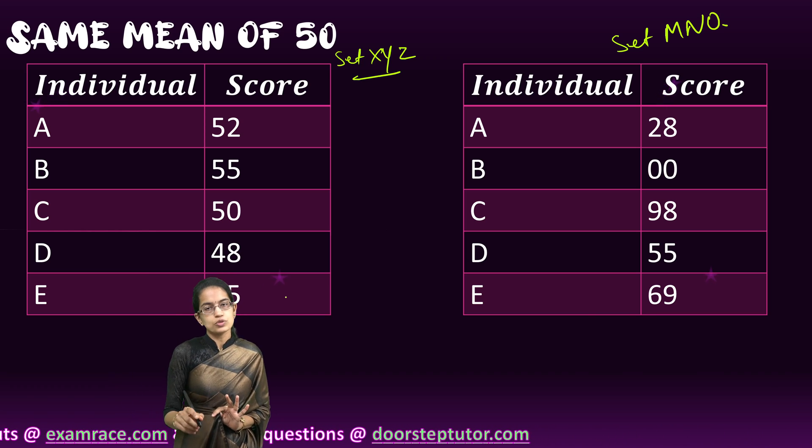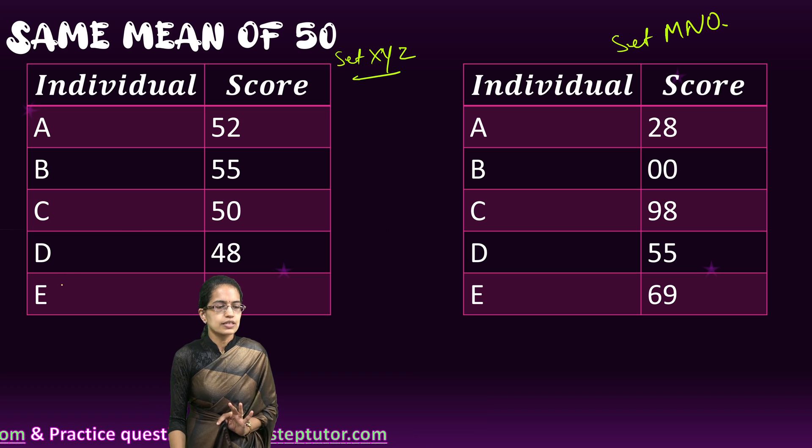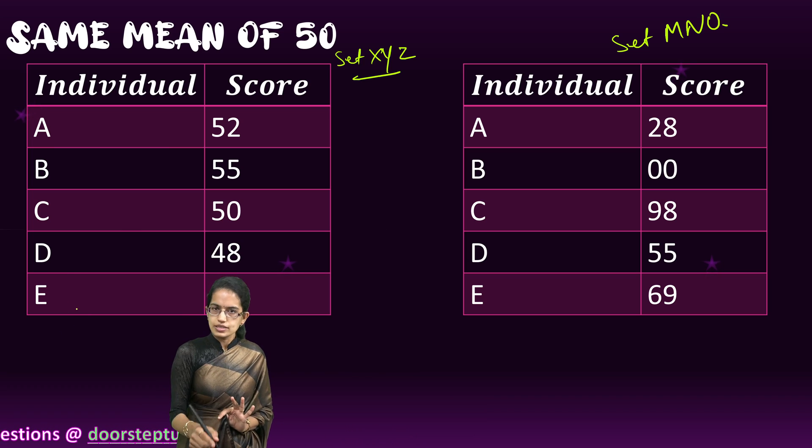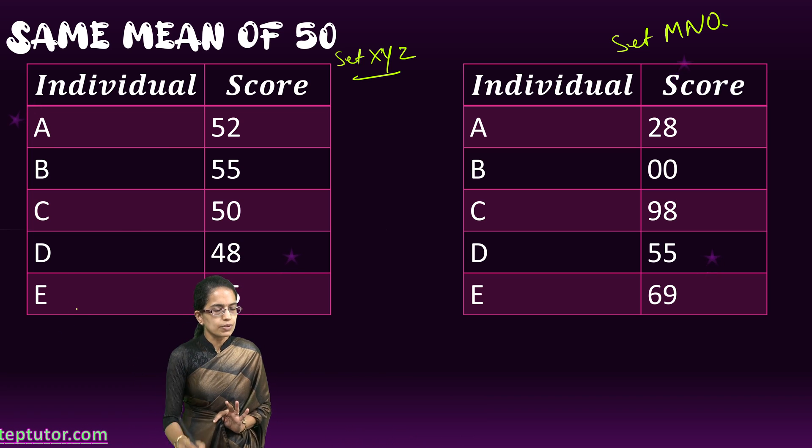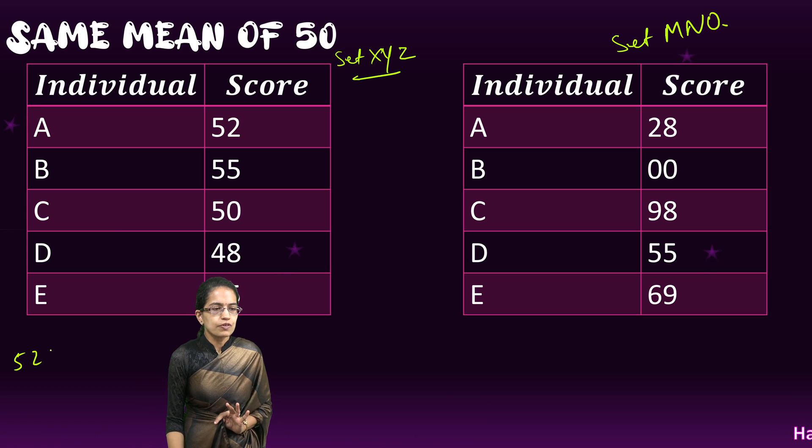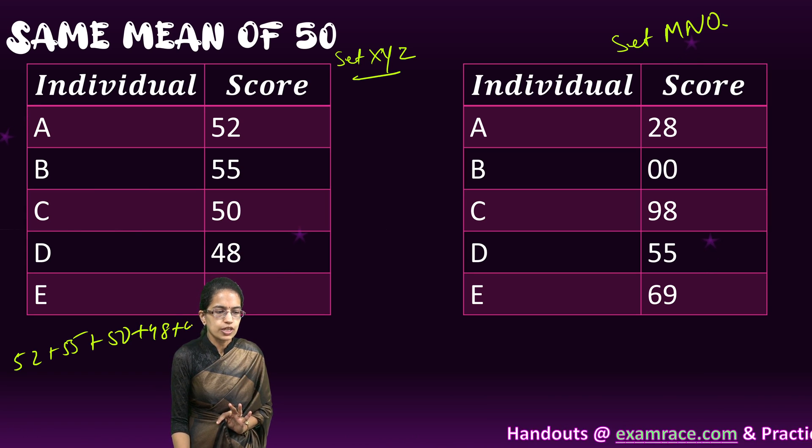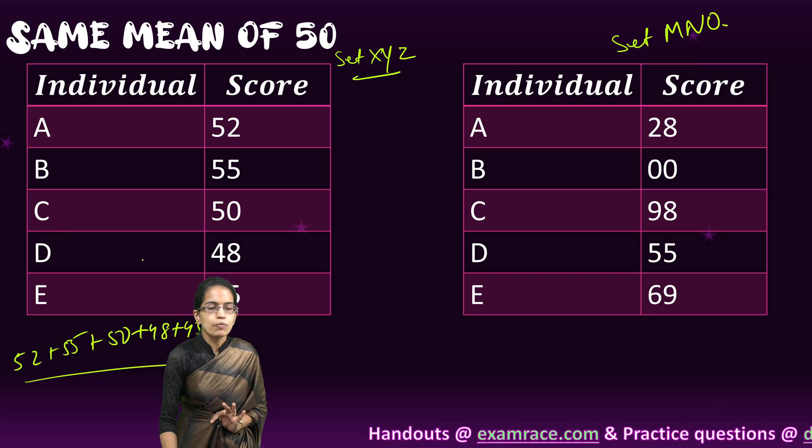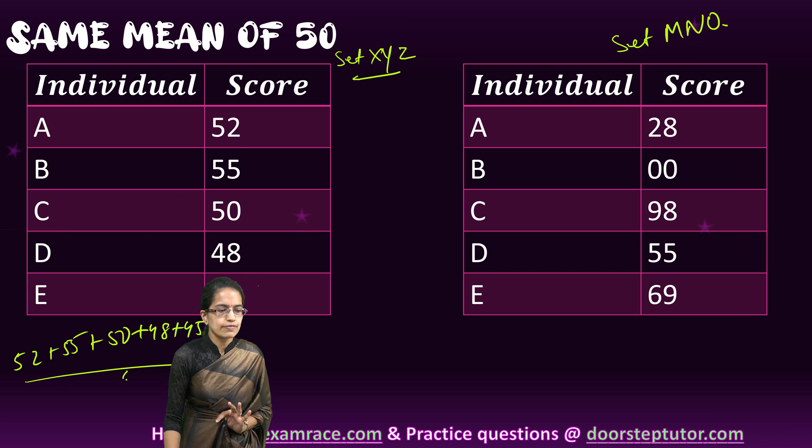If I take a mean of those, we already know how we calculate the mean. Mean is nothing but the sum of the scores divided by the number of scores. So here we say 52 plus 55 plus 50 plus 48 plus 45 divided by 5, and I have a mean of 50.